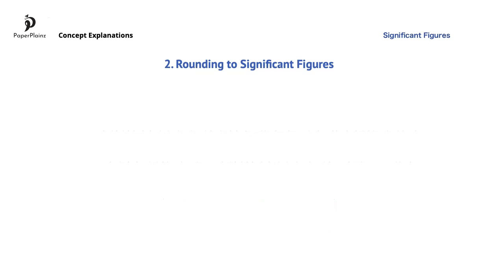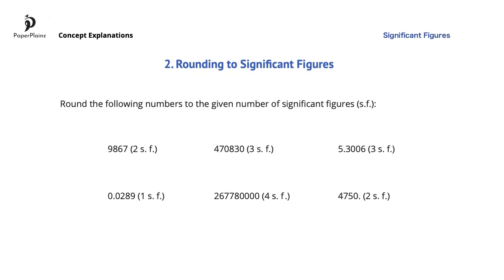Let's see some examples about rounding numbers to significant figures. SF here stands for significant figures. In the first number, we have to round to two significant figures, so let's find the first two significant figures in this number. These are 9 and 8. So we have to round the 8 based on the next number, which is 6. This means that the 8 must be rounded up, so we get 9, 9.